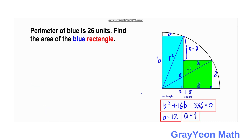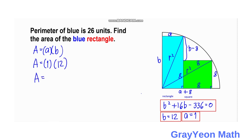Now it is easy to find the area because we already know the dimensions of the blue rectangle, A and B. Area equals A times B, so area equals 1 times 12, which gives us an area of 12 square units. That is our answer.